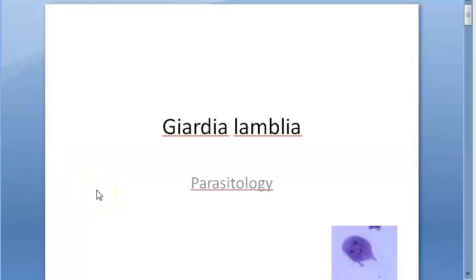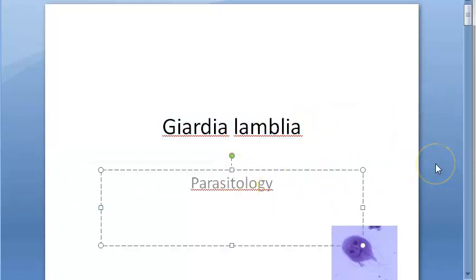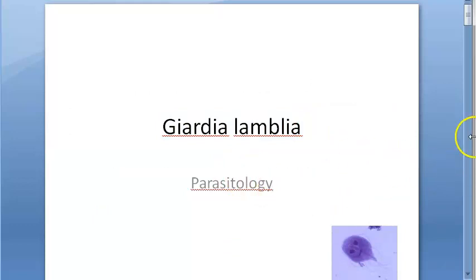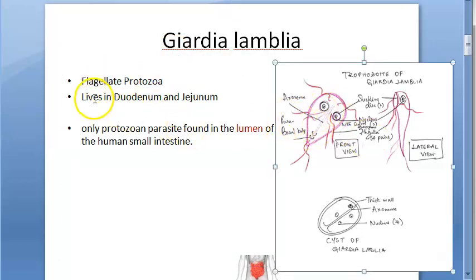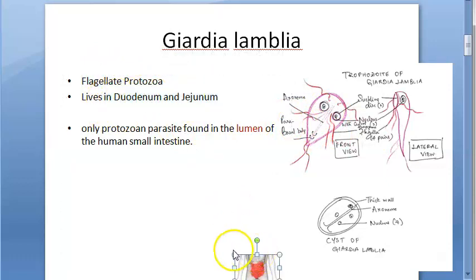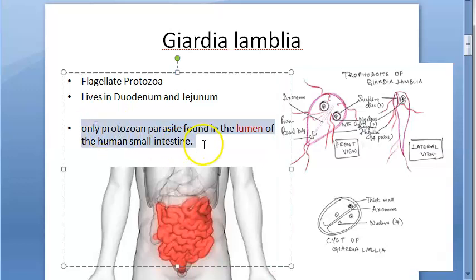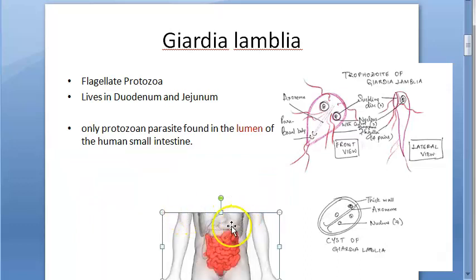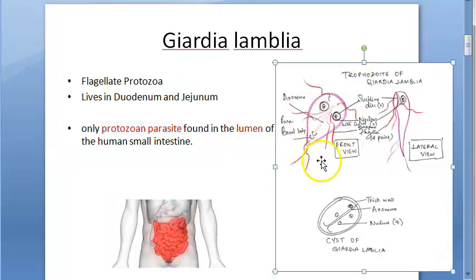Welcome. In this video we want to cover Giardia lamblia. Giardia lamblia is a parasite - it's a protozoa coming under the kingdom Protista. It is a flagellate protozoa. It lives in the duodenum and jejunum, that is the small intestine. It is the only protozoan parasite found in the lumen of the small intestine.